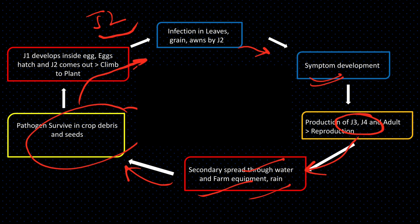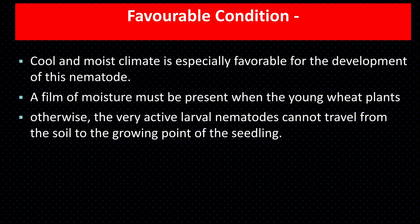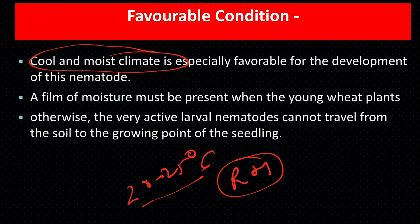Favorable conditions for ear cockle: temperature 22–25°C, high relative humidity, cool and moist climate, and presence of moisture on the leaf. Disease is more severe under these conditions.